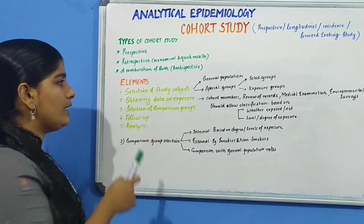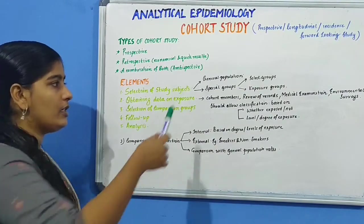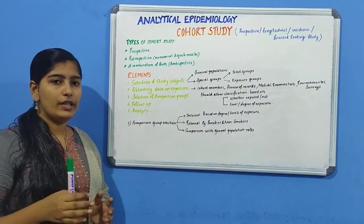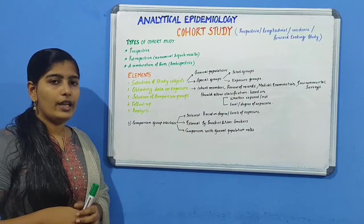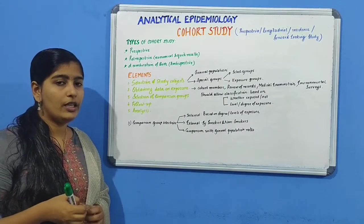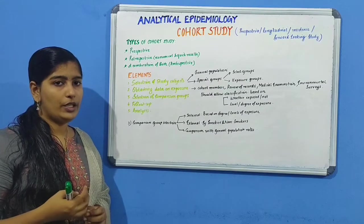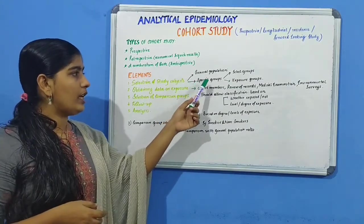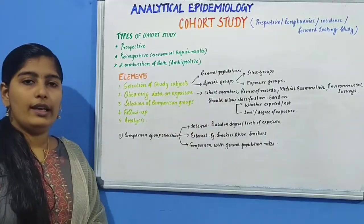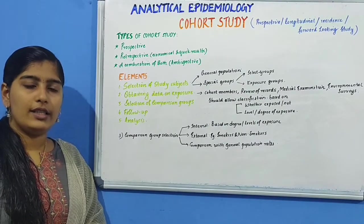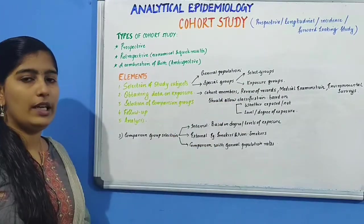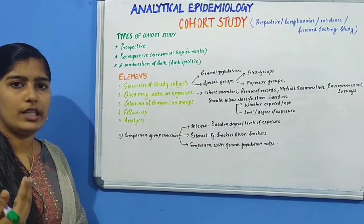First is the selection of study subjects. Study subjects can be obtained from general population or special groups. General population means those living in well-defined geographical areas. If the population is very large, you can select representative samples. Special groups can be either select groups — like professional groups such as doctors, nurses, teachers, or government employees — or exposure groups, for example a radiologist exposed to x-rays.